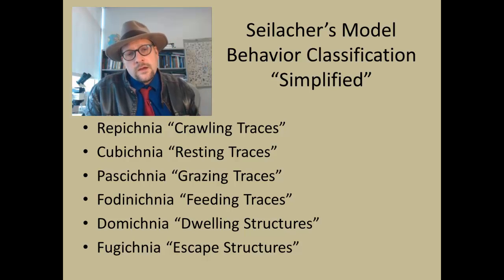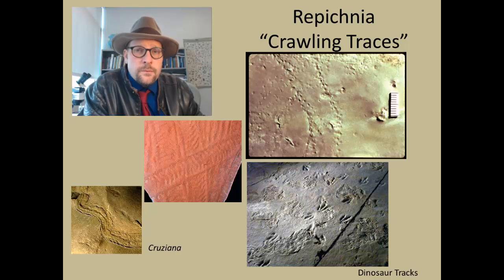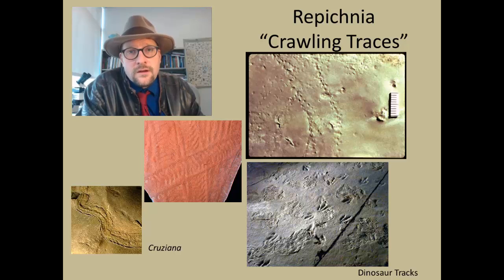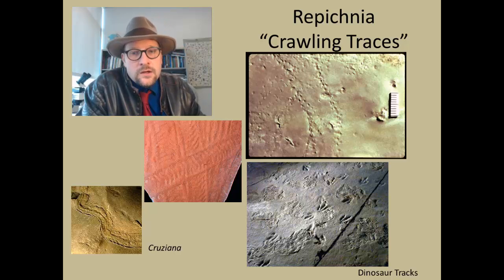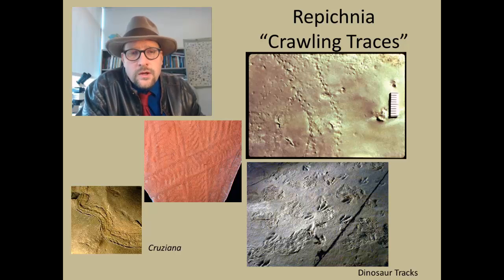Let's look at each one of these and what are some common behaviors you see in trace fossils. What I want you to be able to do is recognize one of these six different types of behavior classification of trace fossils. So this is the repichnia — these are crawling traces, made by organisms that are moving across the substrate, basically laying down tracks. We talked about the trace fossil Cruziana, which is the crawling traces left by trilobites.